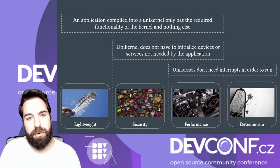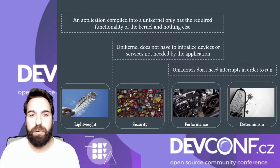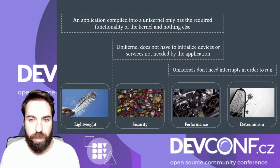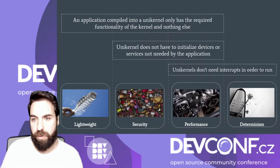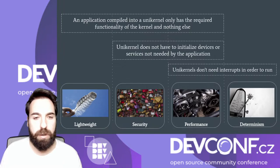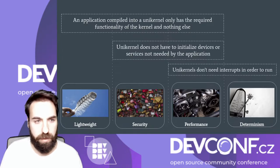Third, Unikernels run a single process. They don't have to switch between rings or take into account kernel scheduling interrupts. So if you remove interrupts, you get a more deterministic application.